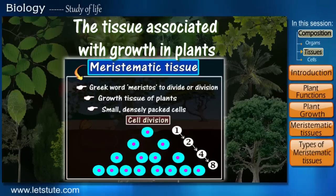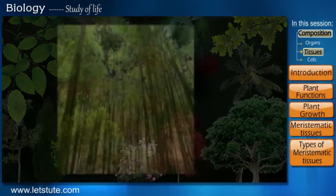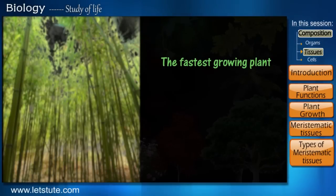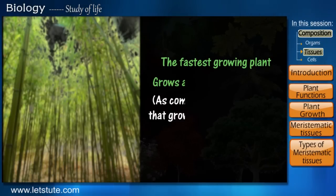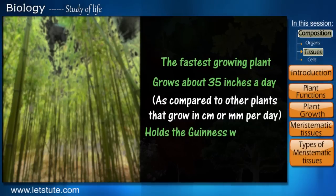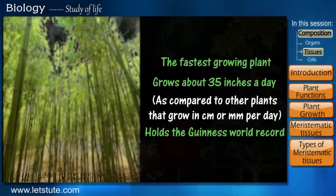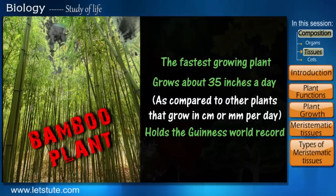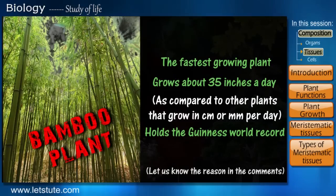But before we end this session, let's get to know an interesting fact about the fastest growing plant. Some species of this plant grow to about 35 inches in a day and have even entered the Guinness Book of World Records. Any guesses which plant it is? It's the bamboo plant! Do you know the reason for its fast growth? If yes, let us know in the comments below.